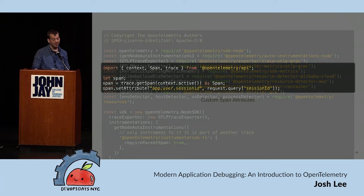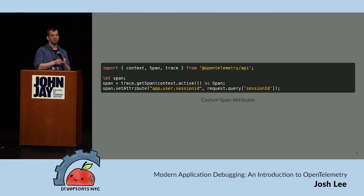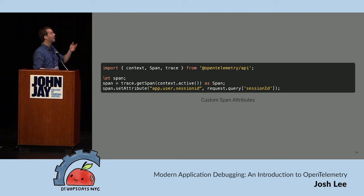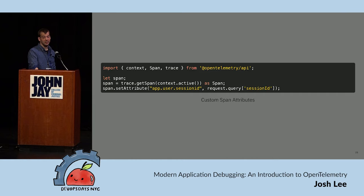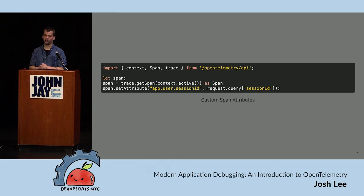Sometimes there are things we want to track that our framework doesn't know about — things interesting to us as a business. In this case it's a user ID. You can also attach cart IDs or product IDs. This kind of metadata lets us debug from the application and user perspective. We can say there's an error occurring with a specific version of a service, a specific product ID, and a customer from a specific region — traces have that story built into their data structure.